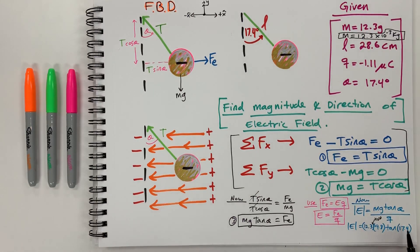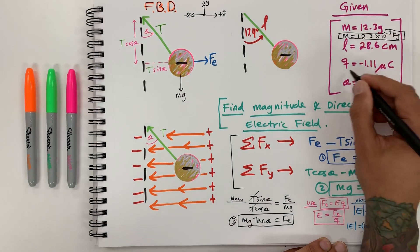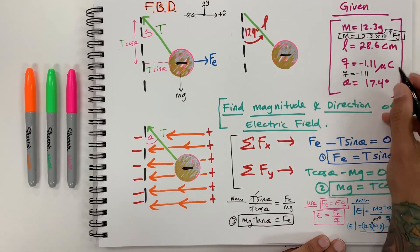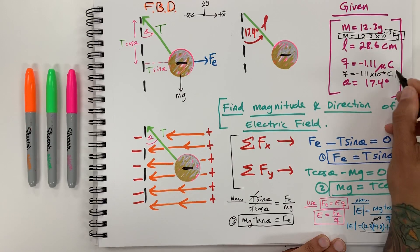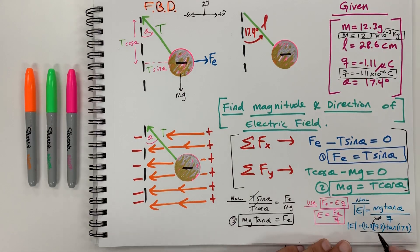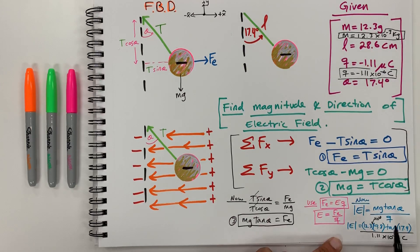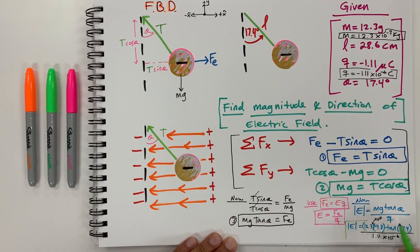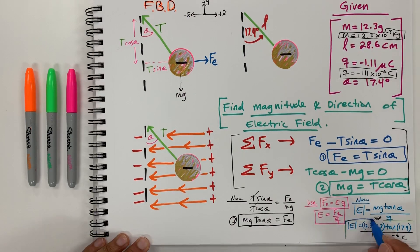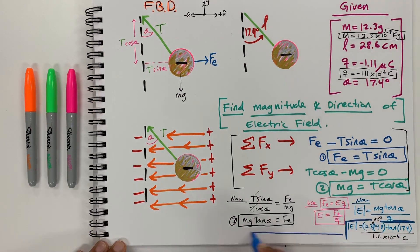Gravity stays the same, tangent of 17.4. On the bottom, Q equals negative 1.11 — micro is times 10 to the negative 6 coulombs. We need everything in coulombs, no microcoulombs or other units. So on the bottom we have 1.11 times 10 to the negative 6 coulombs. Now we have the units for the electric field, and this gives us the answer.